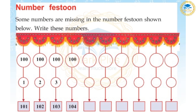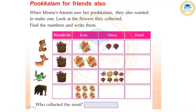Number stone. Some numbers are missing in the number stone shown below. Write these numbers. Who in the different representations represents the same way? The animals are Monkey, Deer, Parrot, and Elephant. They each collect flowers.